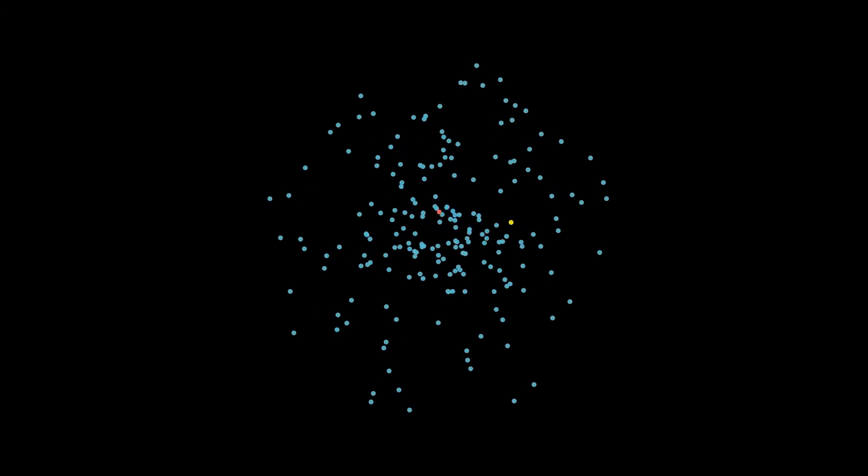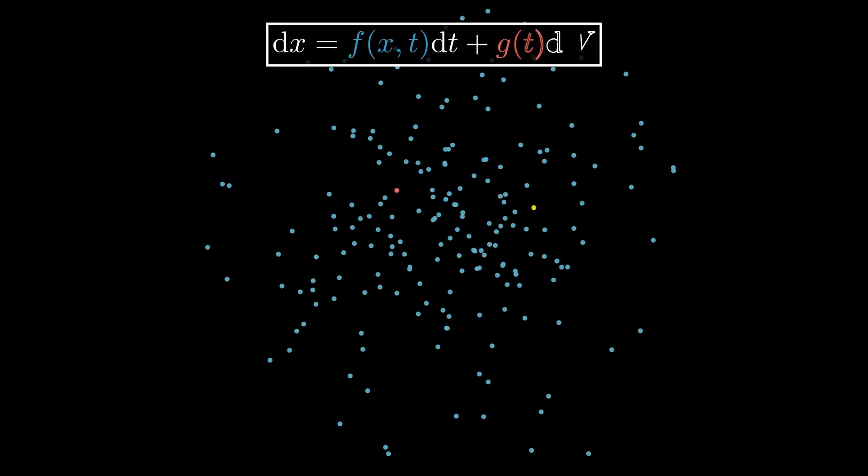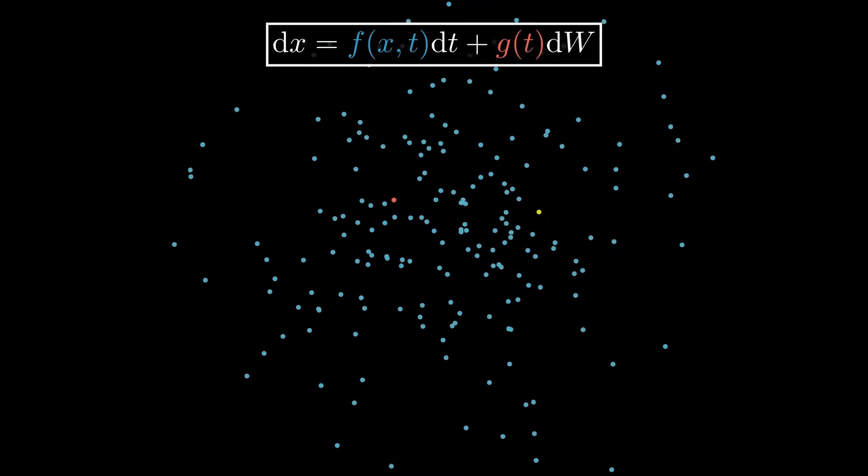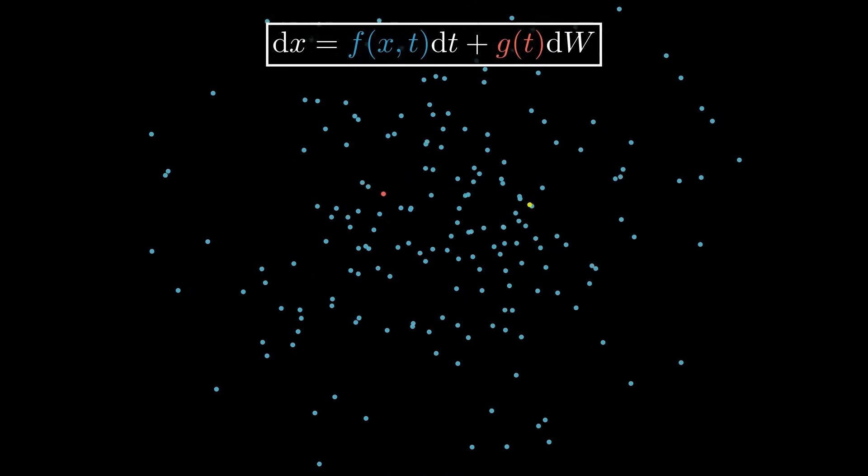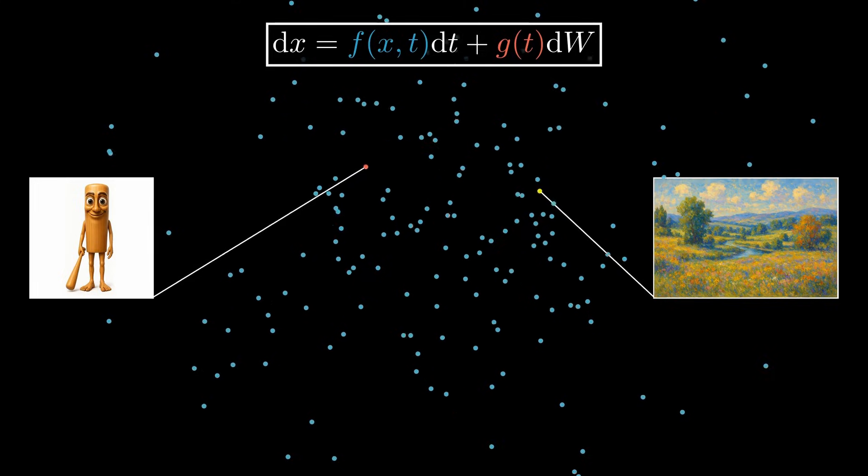Look at these tiny particles drifting randomly through space, bouncing and spreading in every direction. While this process appears chaotic, we actually know the physical equations governing the movement of these particles. And even more surprisingly, the same equations are at the heart of the revolution behind much of today's generative AI.